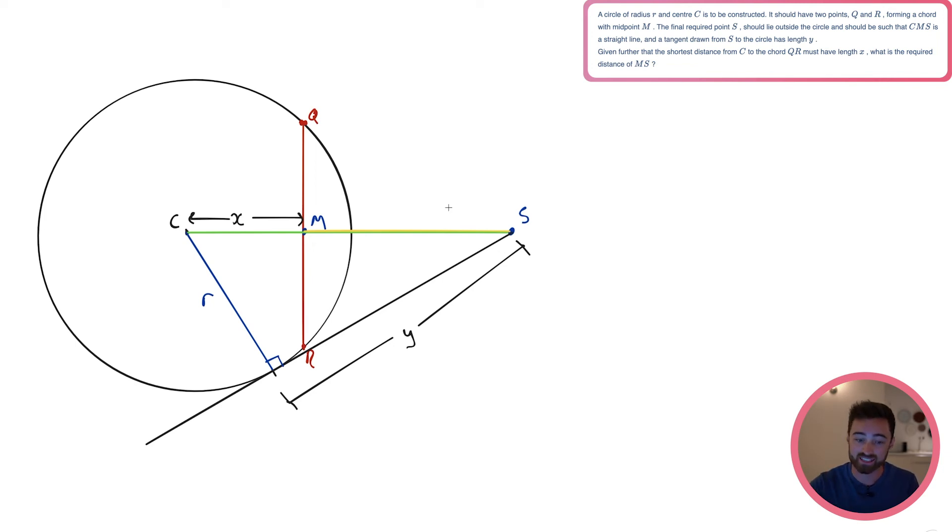So if I had CS squared, that's the hypotenuse, right? So that is going to equal R squared plus Y squared. Okay. What do I now need? Well, let's think. Let's get CS, right? So CS is essentially going to be the square root of all of this. So CS is going to be the square root of R squared plus Y squared.